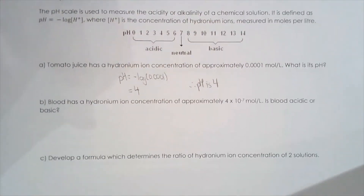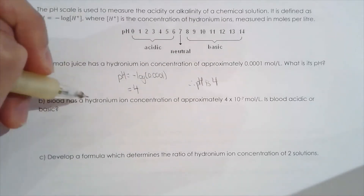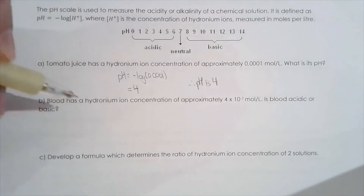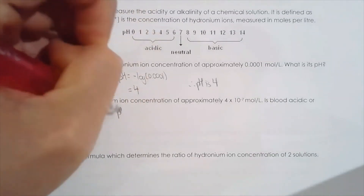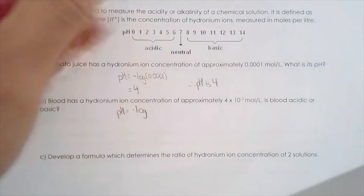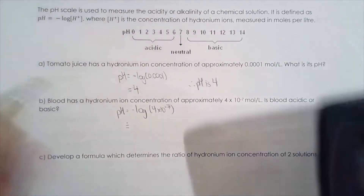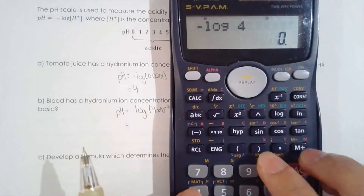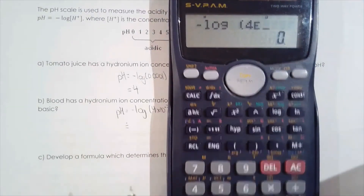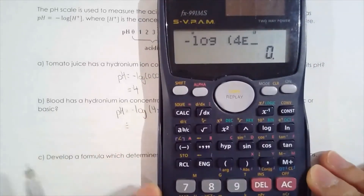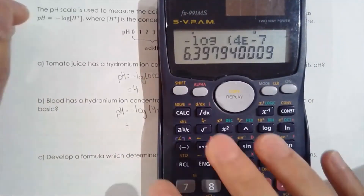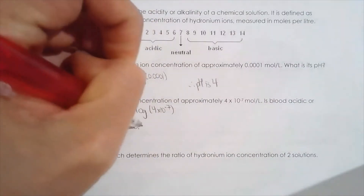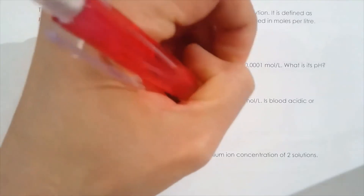What about blood? Blood has a hydronium ion concentration of 4 times 10 to the negative 7 moles per liter. Is it acidic or basic? Just punch this into our formula. In case you don't know how to type scientific notation into your calculator: 4 times 10, using the E button for exponent, times 10 to the negative 7. The result is approximately 6.4. Since 6.4 is less than 7, blood is slightly acidic.